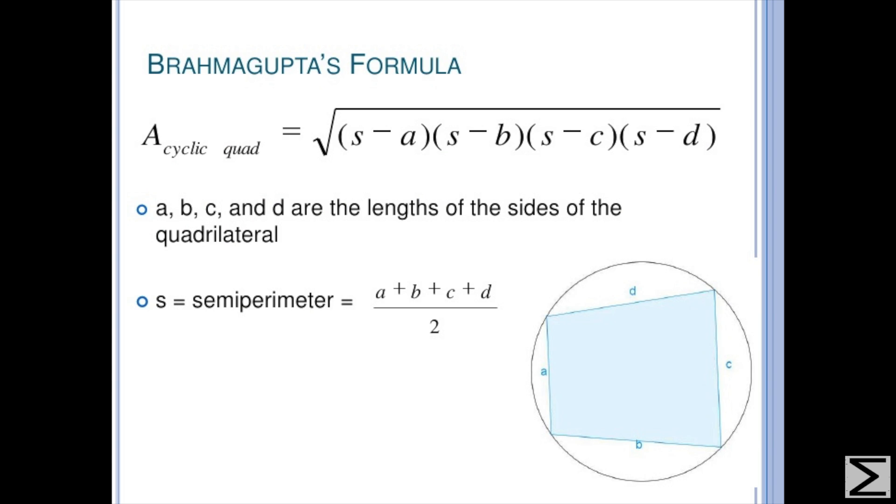Finally, Brahma Gupta was able to develop a formula to find the area of a cyclic quadrilateral, which is known today as Brahma Gupta's formula. This formula sets the area of a cyclic quadrilateral equal to the square root of the product of differences of the semi-perimeter and each of the side lengths, where the semi-perimeter is equal to half the perimeter of the quadrilateral. Here's one way to derive this result.